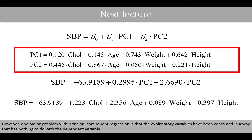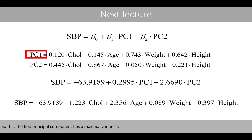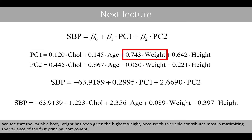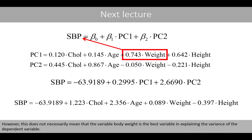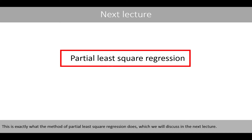However, a major problem with principal component regression is that the explanatory variables are combined in a way that has nothing to do with the dependent variable. The weights are optimized to maximize the variance of the first principal component, so body weight receives the highest weight — not because it best explains blood pressure variation, but because it contributes most to PC1 variance. This is exactly what partial least-squares regression addresses, which we will discuss in the next lecture.